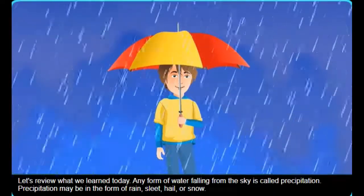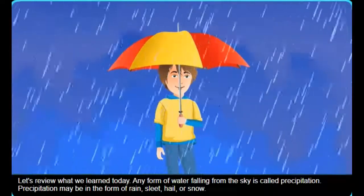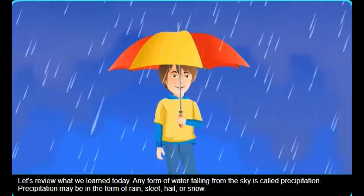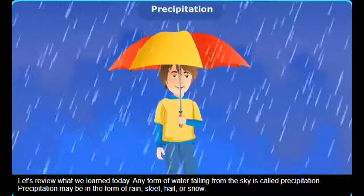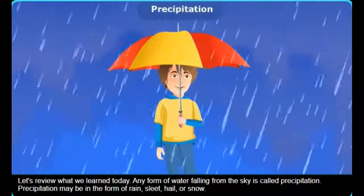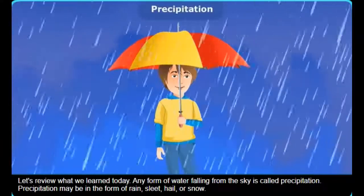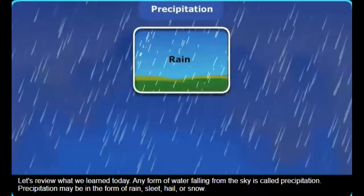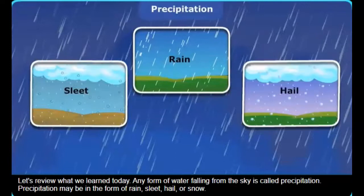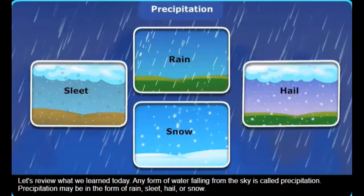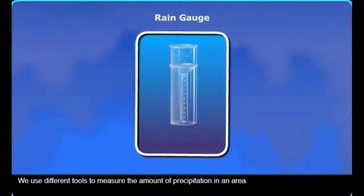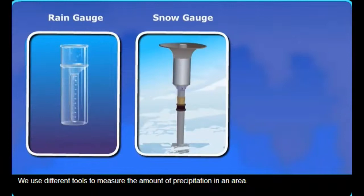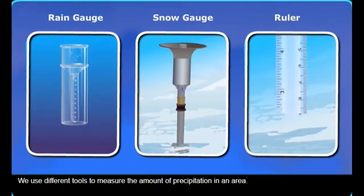Let's review what we learned today. Any form of water falling from the sky is called precipitation. Precipitation may be in the form of rain, sleet, hail, or snow. We use different tools to measure the amount of precipitation in an area.